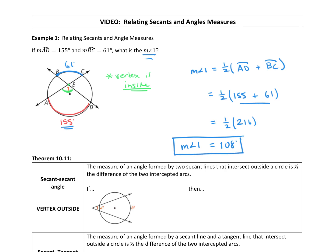Remember, angle one is an angle formed by two secants where the vertex was inside the circle. So your angle is equal to half of the sum of the arcs that it intercepted.